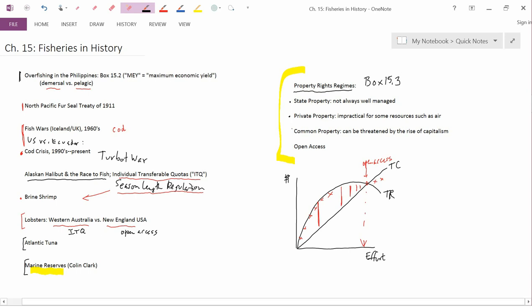The next topic here is common property. Now, the tragedy of the commons uses the word commons, as in common property. But as I said, that's actually an incorrect title for that work. That work should have been titled The Tragedy of Open Access.